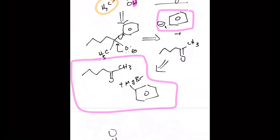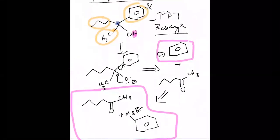The MgBr that was added — that was because of the lone pair left on that ring. The other part about retrosynthesis is that whatever group you kick off, that's the group that's going to become your Grignard starting material. That's why I stuck the magnesium on there.